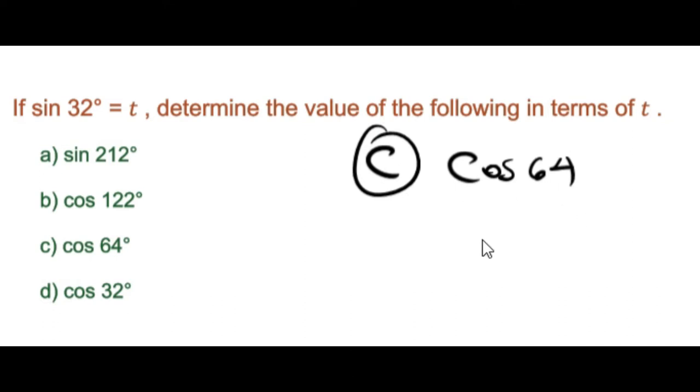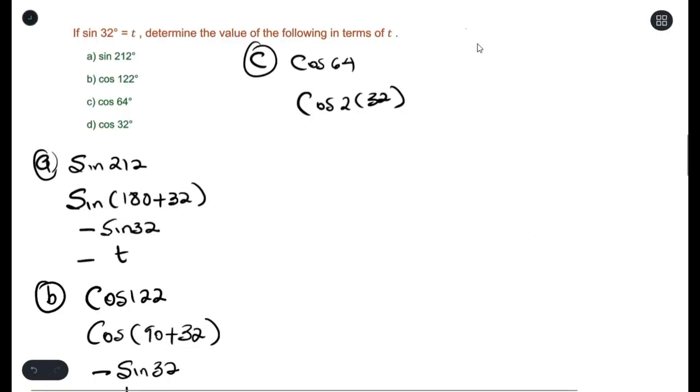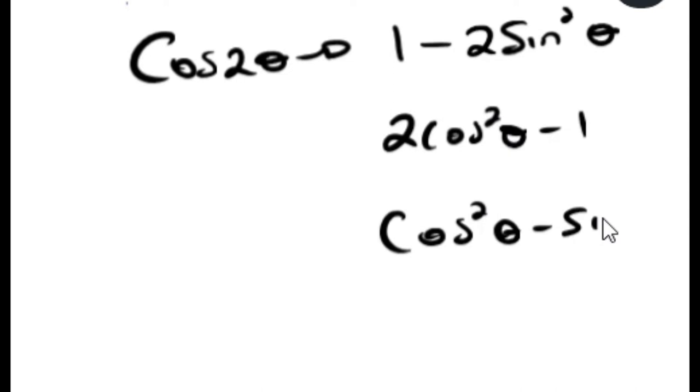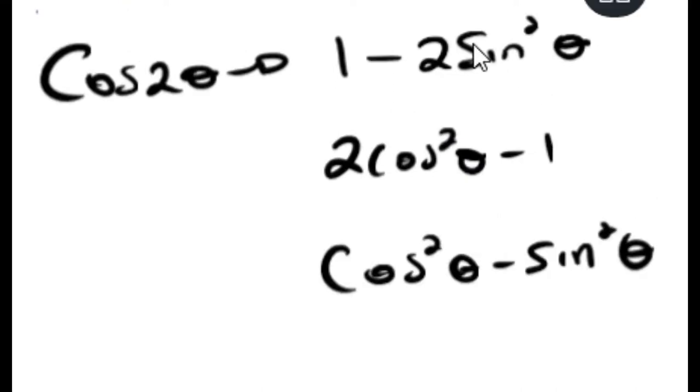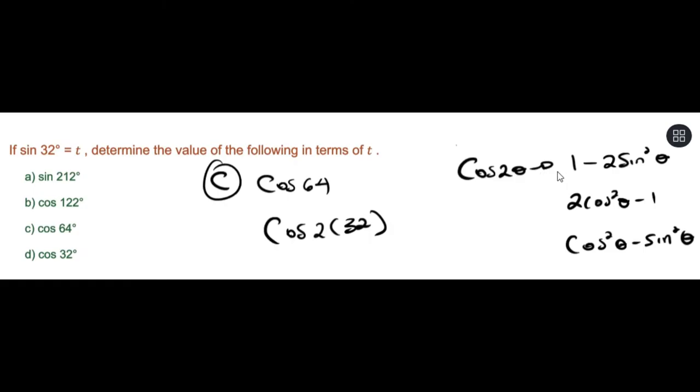We can rewrite 64° using double angle identity. The formulas give us three choices for the cosine value of the double identity. Since we have sin θ but don't have cos θ, out of these three choices,